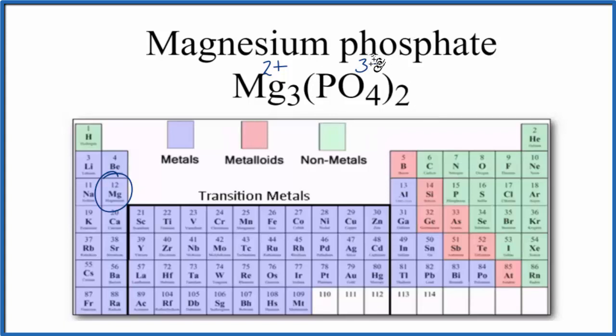The entire phosphate ion has a 3- ionic charge. We have two of them. 2 times 3-, that gives us 6-, 2 times 3+, 6+. So you can see that these will cancel out, and we have a net charge of zero.